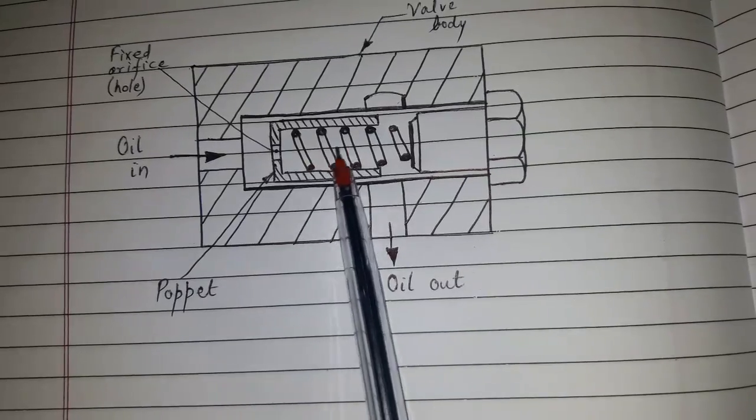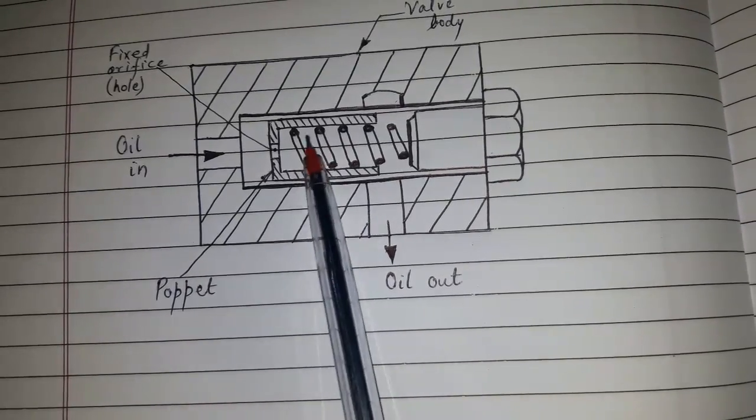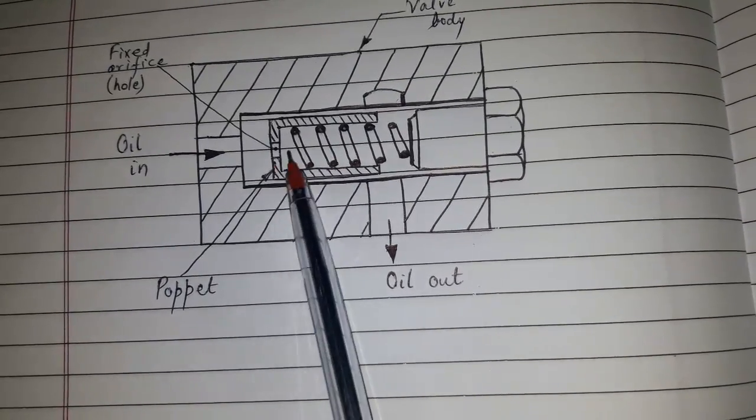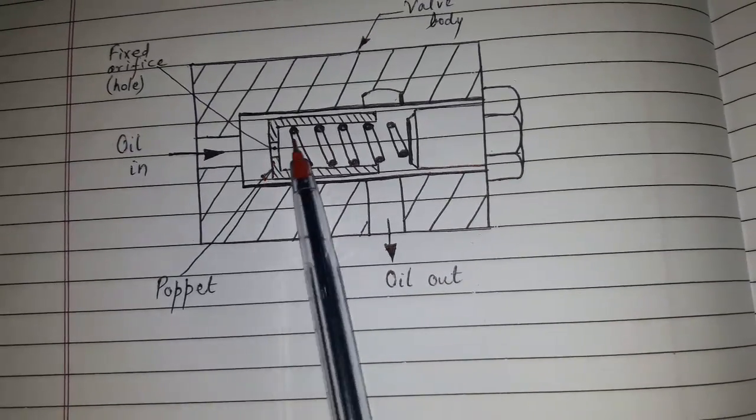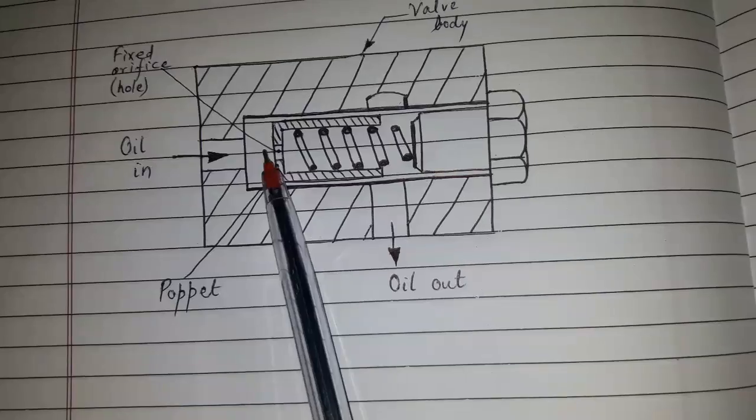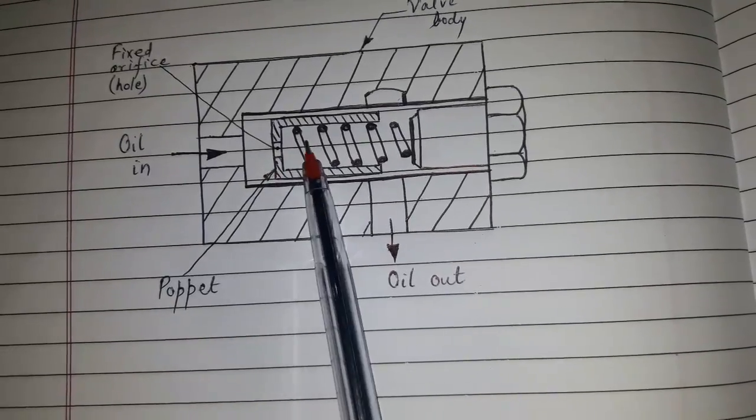Oil will occupy the bore of the poppet cylinder. This flow of oil will equalize the pressure on both ends of the poppet. The poppet will then balance.